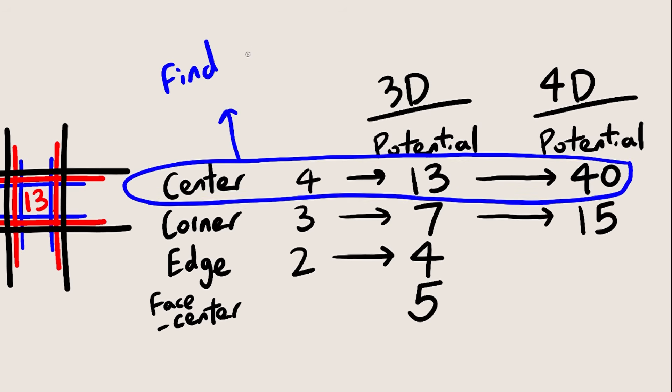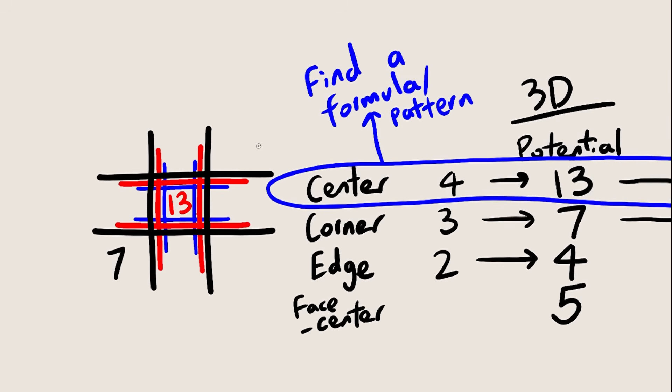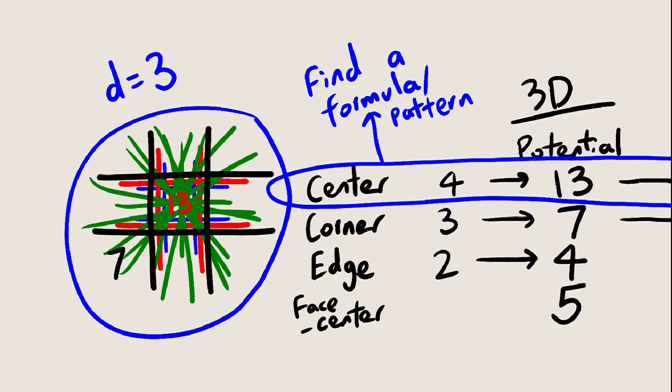I encourage you to pause and try to find a general formula for the potential of the center spot in terms of the dimension, which we'll call D. In other words, given a game of tic-tac-toe in D dimensions, how many 3 in a row go through the center spot? For D equals 2, normal tic-tac-toe, your general formula should spit out 4, and if you plug in D equals 3, it should give you 13. You can also try to find a general formula for the potential of the corners as well.